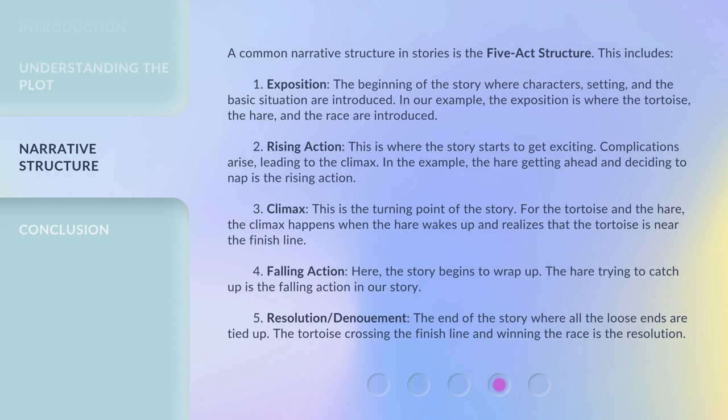The five-act structure includes: 1. Exposition — the beginning of the story where characters, setting, and the basic situation are introduced. In our example, the exposition is where the tortoise, the hare, and the race are introduced.